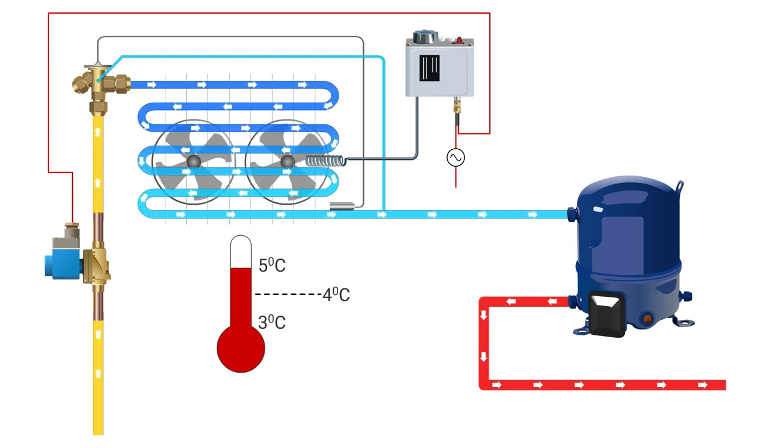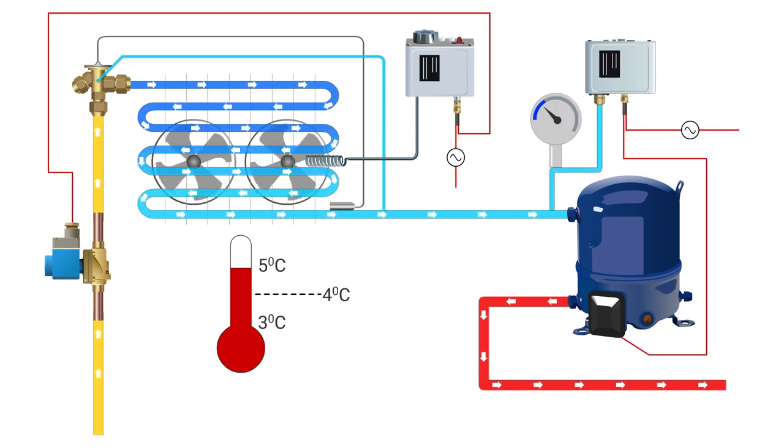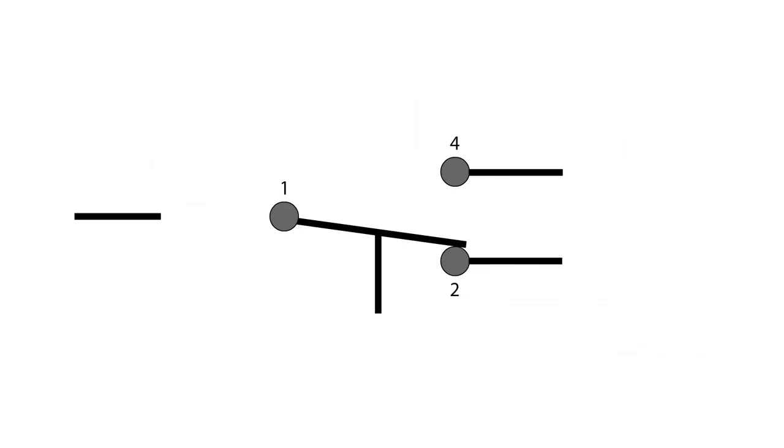So you also need to install the pressure sensor or pressure switch that switches off the compressor when it has sucked the evaporator dry of the refrigerant. But let's first talk about the switch mechanism inside the pressure switch of the Danfoss KP1 which is a single pole double throw type.